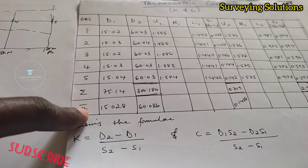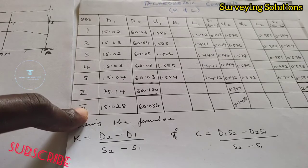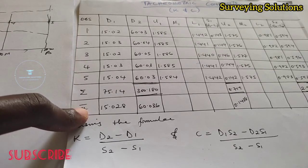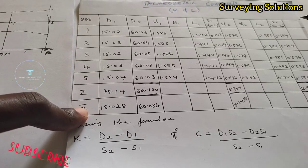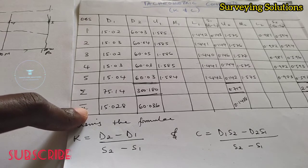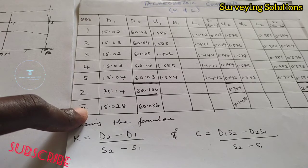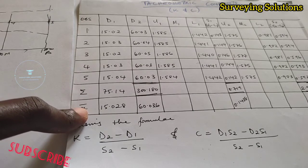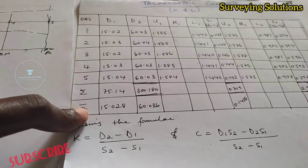We then move the staff to the 60-meter mark. The same thing happens — readings are 60.03, 60.04, 60.05, and so on. Instead of getting exactly 300, the total is 300.18. Dividing by 5 gives us the mean D2 = 60.036.